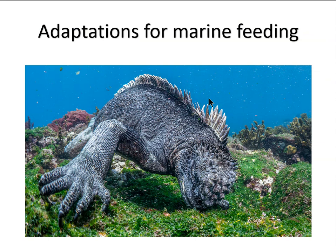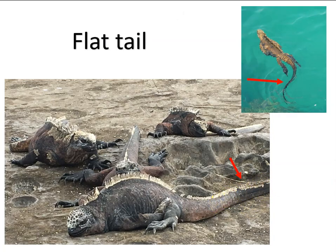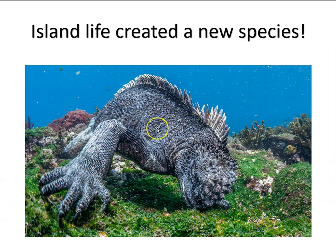Returning to the Galapagos Islands, we see the marine iguana feeding on algae on the rocks underneath the water. They have longer claws than the mainland species and a flatter tail. The Galapagos species have evolved new sets of adaptations for island life. The idea is that a South American species of iguana made it to the Galapagos Islands, and island life changed them — creating a new species found nowhere else in the world.